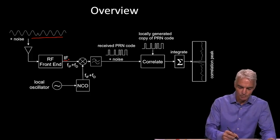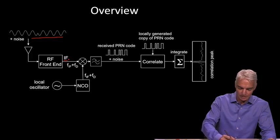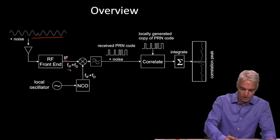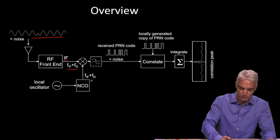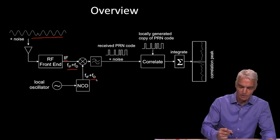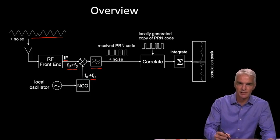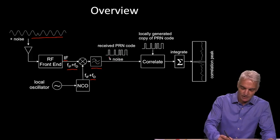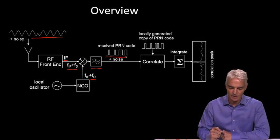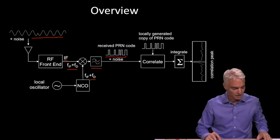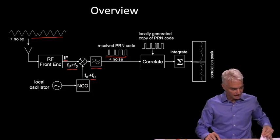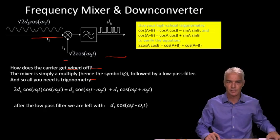A lower frequency is sampled digitally and multiplied by a similar frequency — FIF plus FD, which we'll discuss later. We generate a similar frequency, multiply it together, pass it through a low-pass filter, and we said that this takes away the carrier wave and leaves us with the PRN code plus some noise. How does that happen? That's what we're going to look at today: frequency mixers and down converters.